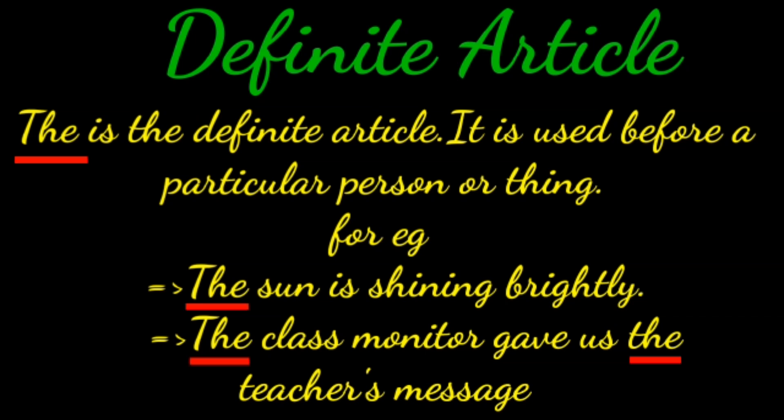Now we are moving to definite article. The is the definite article. It is used before a particular person or thing. While a and an are used before any person or thing, the is used before a specific person or thing.